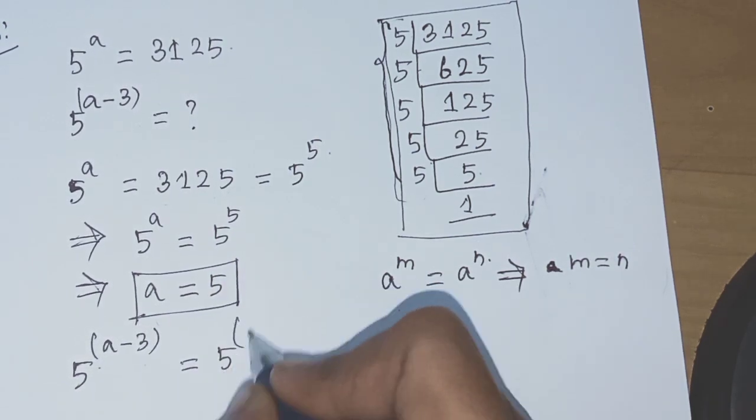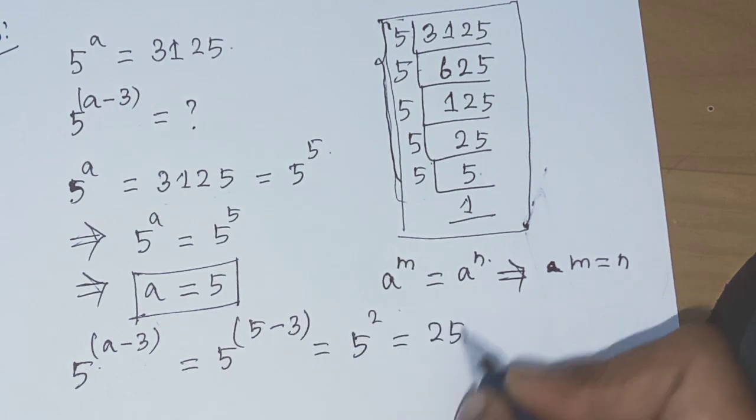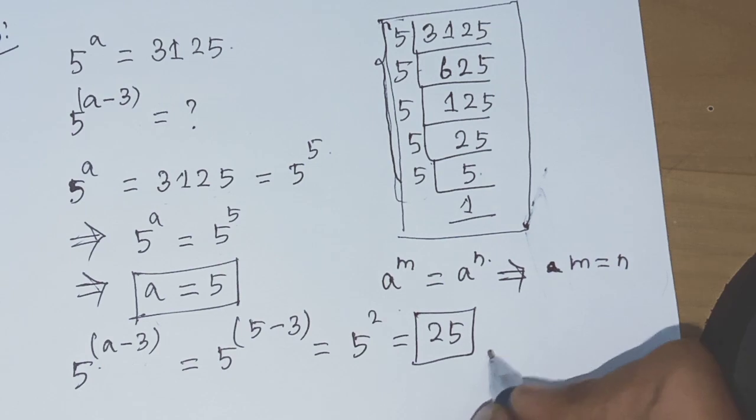5 power A minus 3 equals 5 power 5 minus 3, which equals 5 squared. 5 squared is 25. So 25 is the final answer.